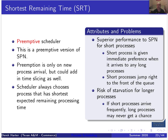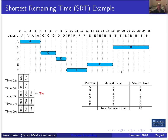Both SPN and SRT favor short processes, and SRT even more so — without preemption, a short process arriving just after a long process starts must wait a long time regardless. This gives superior performance for short processes. However, we have a big risk of starvation for longer processes: if there's a steady stream of short processes, long processes might never get to run, so you may need to balance that out.